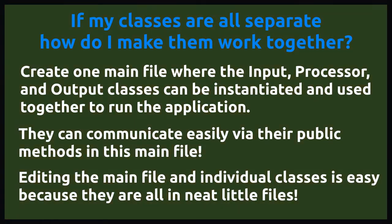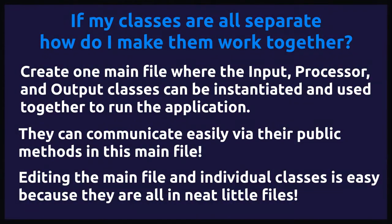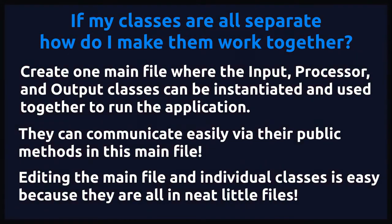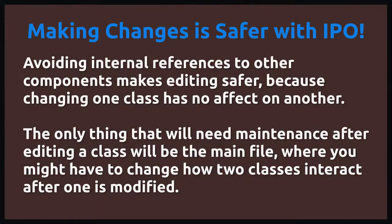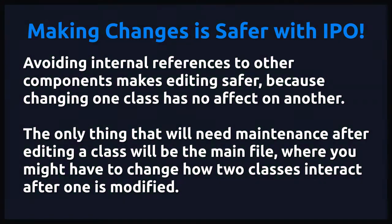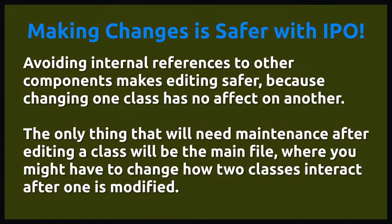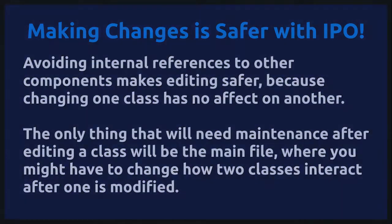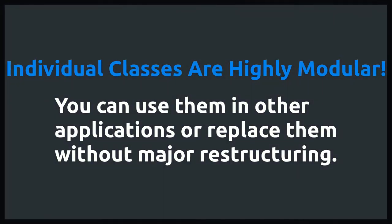Now that we have our classes, we can bring them together in the main application file. We can instantiate each one and have them communicate with their public methods. Whenever you want to edit a class, you can easily locate all of its inner workings in one file. And if you make any major changes, it won't affect any of the other classes — the most you might have to do is rewrite some of the interactions between classes in the main file. Even if you prefer to have everything in one big file, you can still edit each class without breaking the others, which is why this approach improves maintainability.